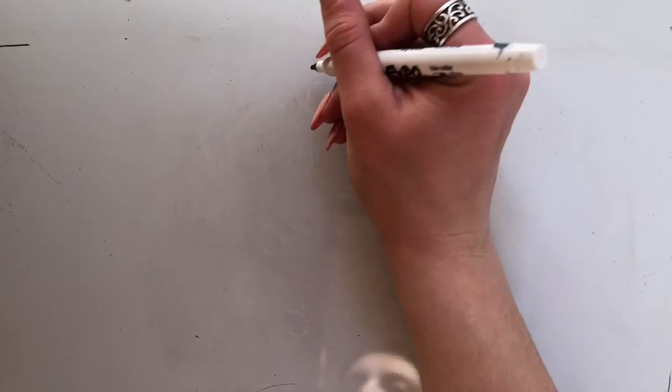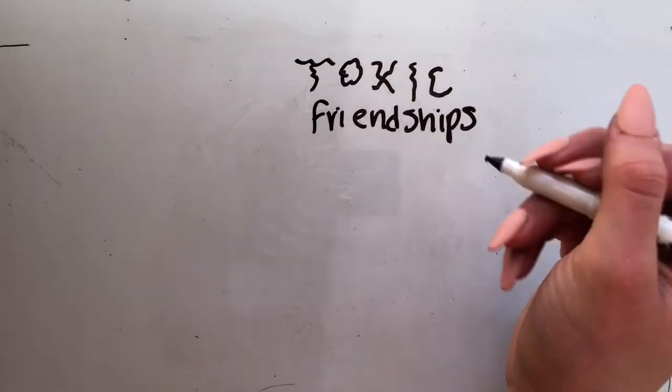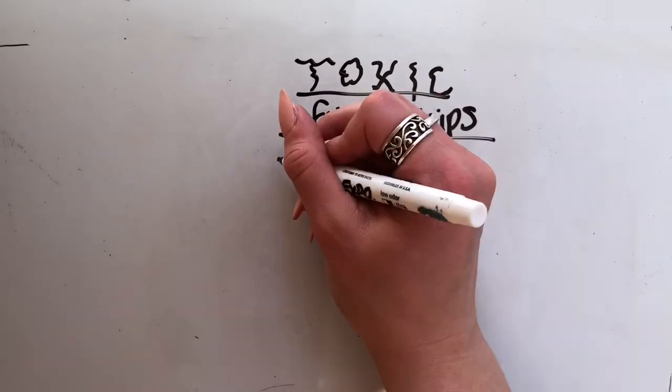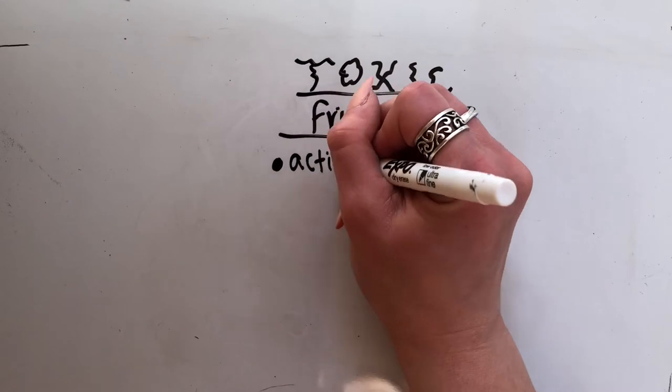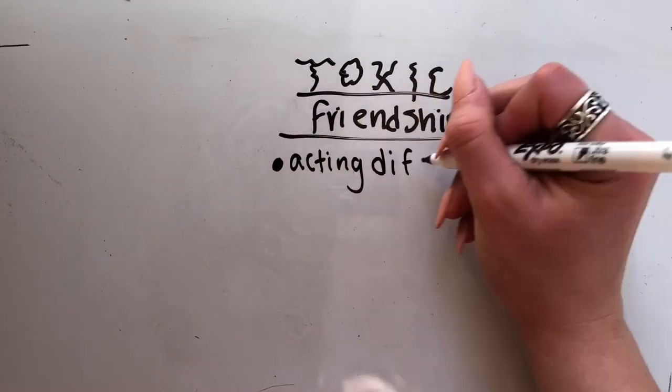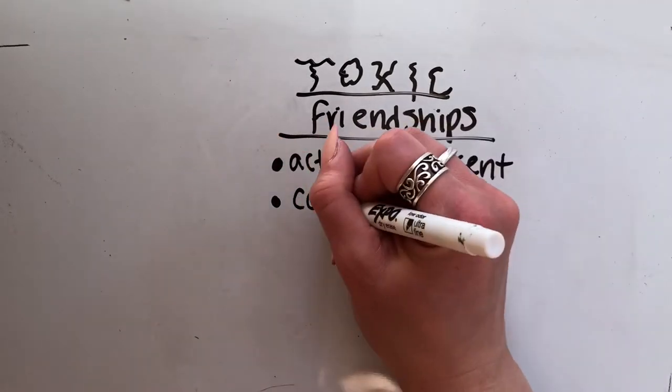Another important part of healthy friendships is knowing when they become toxic and how to let go of these friends. Some red flags to look out for are, acting differently around them and not in a good way. If you find yourself changing how you talk or act to make yourself fit in with them more, and you don't like how you act with them, that is often a sign of toxic friendship.